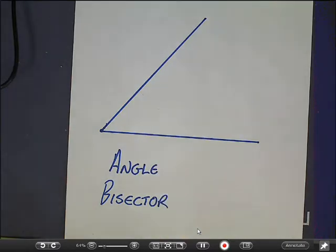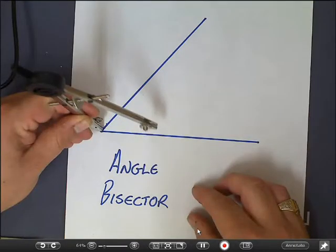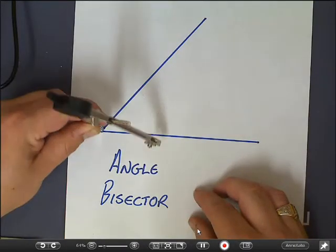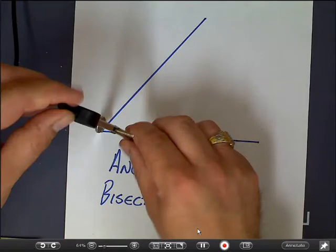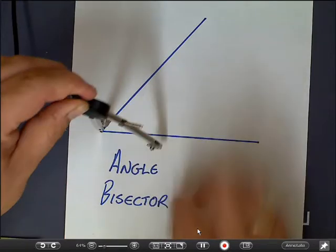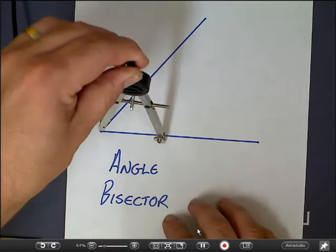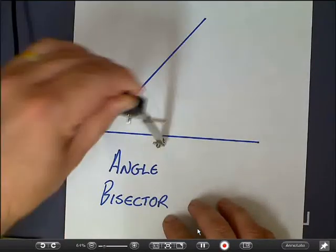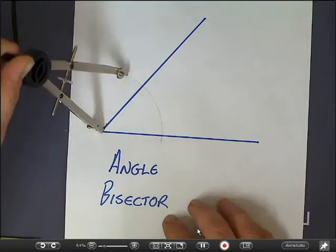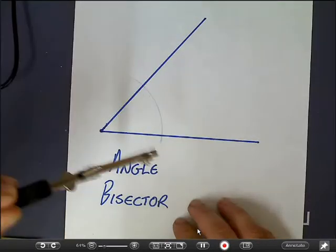Here we go. With our compass, we just put the point right on the vertex of the angle, and we just randomly pick a measurement, which doesn't really matter what it is, and we just draw an arc, like so.